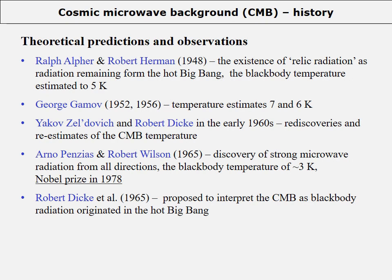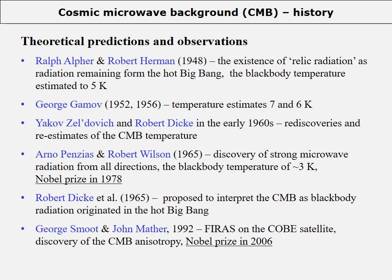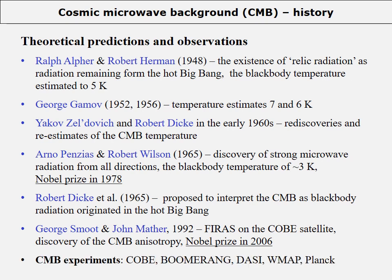A great step forward was made by Penzias and Wilson, who built the Dicke radiometer and discovered strong microwave radiation coming from the universe in all directions. The temperature of the radiation was about 3 Kelvin. Immediately after this discovery, Dicke and others proposed to interpret the CMB as blackbody radiation originating in the hot Big Bang. In 1992, Smoot and others revealed small-scale temperature fluctuations in the CMB called CMB anisotropies, attracting enormous attention from astronomers and physicists.